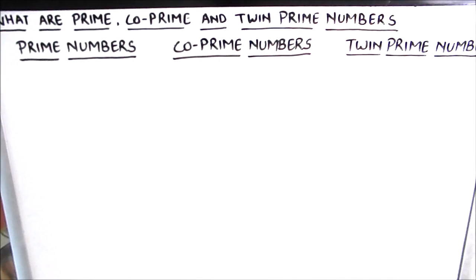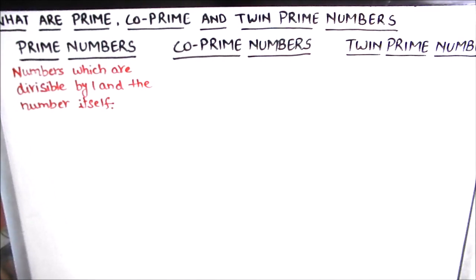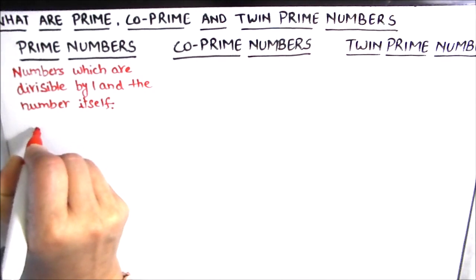Hello students, in this video we are going to learn what are prime numbers, co-prime numbers, and twin prime numbers. We are going to discuss the definition with examples of all these types of numbers. Numbers which are divisible by 1 and the number itself are prime numbers. Another definition: numbers which have the factor of only 1 and the number itself are prime numbers.